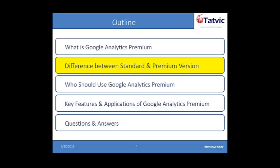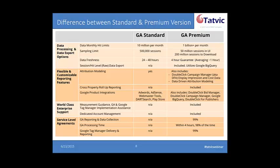Now let's jump into some of the differences. One of the most important things with the premium version is that you have better data processing and data export options. In terms of volume, premium clients have a lot more traffic than standard clients. In GA standard, there's a monthly hit limit of 10 million per month. In Google Analytics Premium, that goes to 1 billion and beyond.